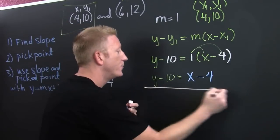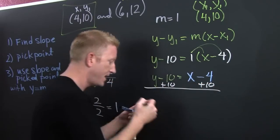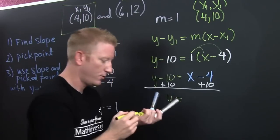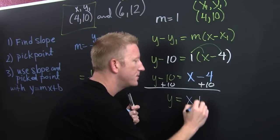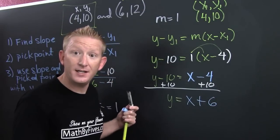So then in order to do that, we're going to go ahead and add 10 to both sides. And we're going to find that y is equal to, wait for it, x plus 6.